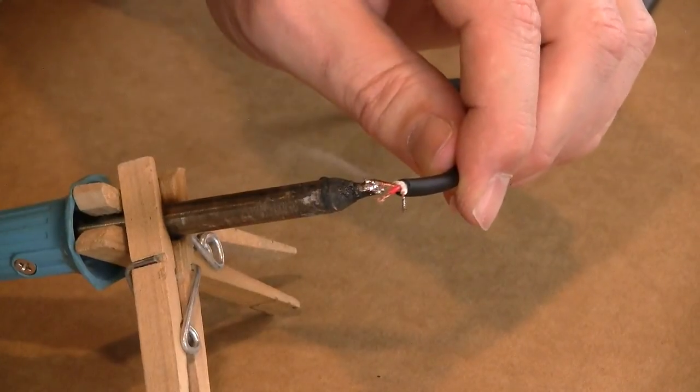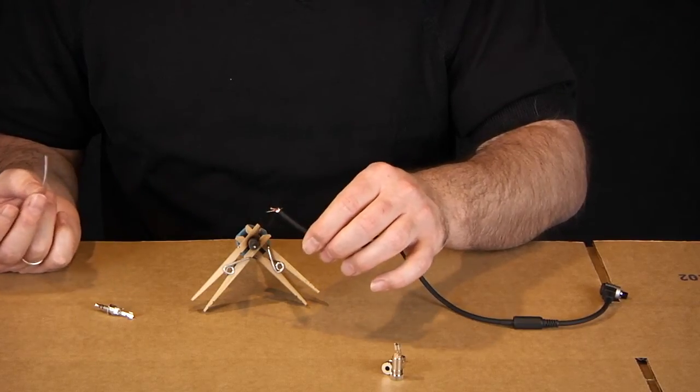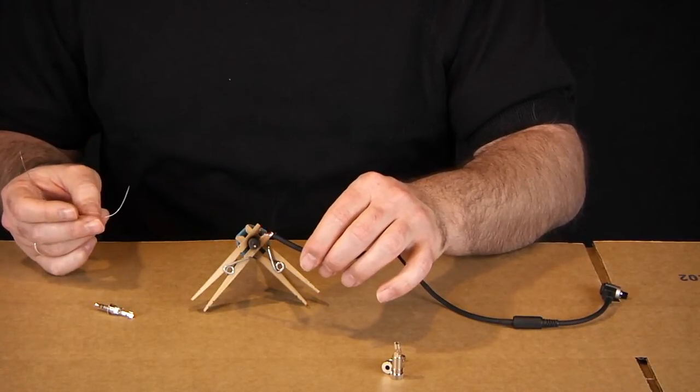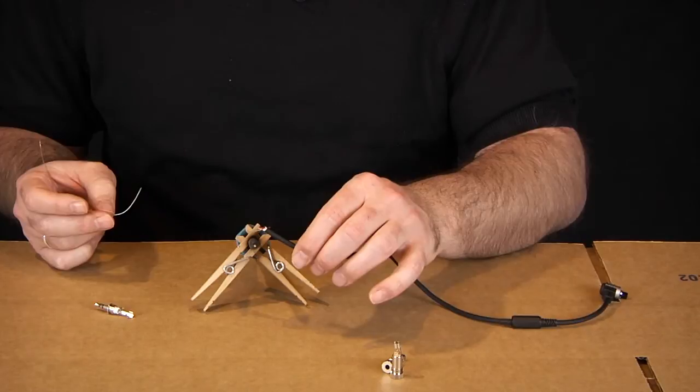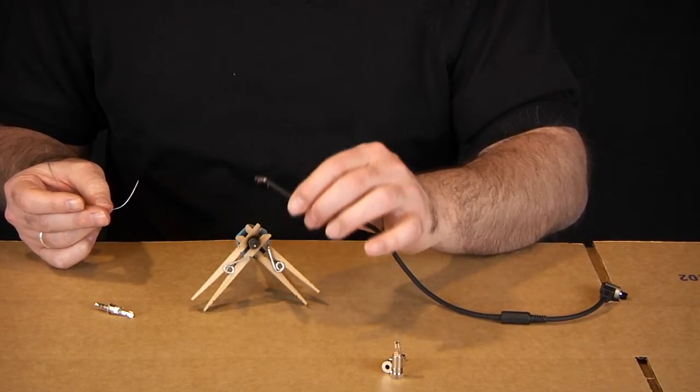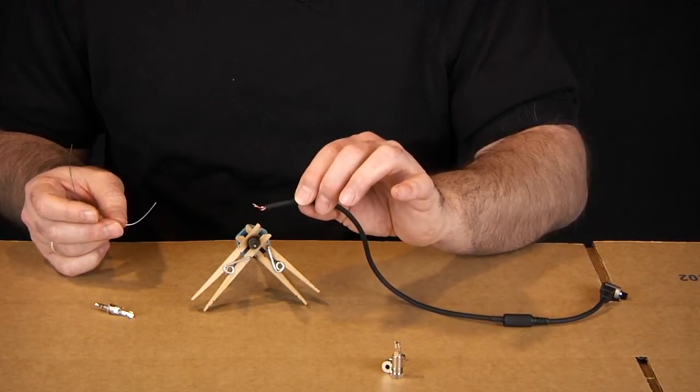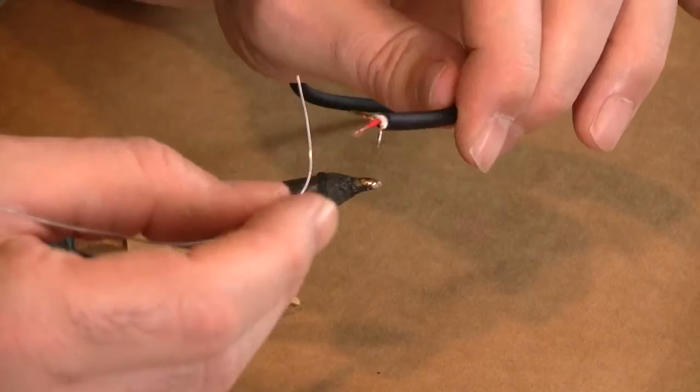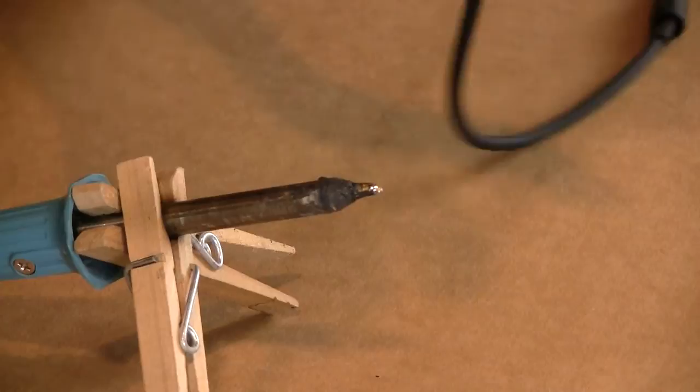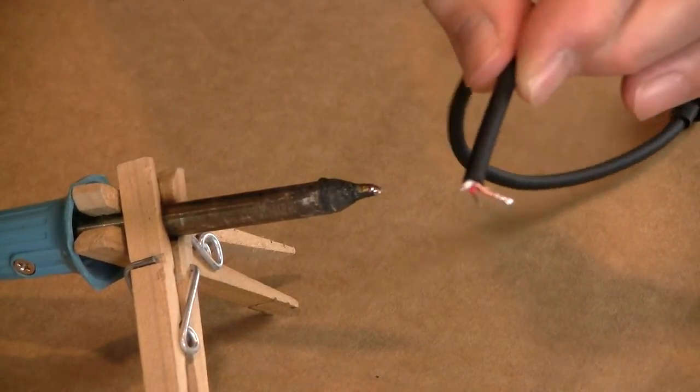Now I've had this soldering iron probably for 30 years. I had it when I was in high school. It still seems to work fine. You just want to make sure that you keep your tip clean. And you don't want to rest the wires onto the iron very long or it'll start melting the shielding back. And you certainly don't want to have any of that shielding touch anything in there. So go ahead and just give it a quick touch and it'll tin it. And there you can see where the wire is nice and tinned.